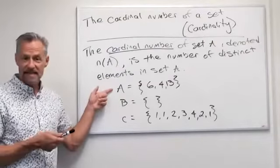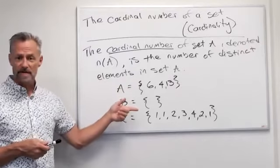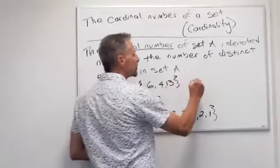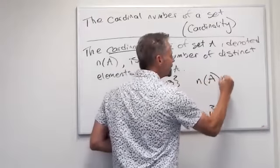So for instance, in this set A, we have the numbers 6, 4, and 13. Well, there are three different numbers in there. So we would write the cardinality of A is 3.